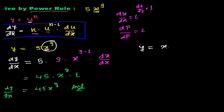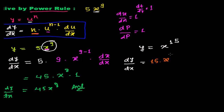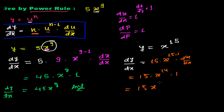Suppose the function is y equals x to the power 15. Differentiating with respect to x: bring down the power 15, times x raised to the power 15 minus 1, times dx/dx which equals 1. So the result is 15 times x to the power 14. Therefore dy/dx equals 15x to the power 14.